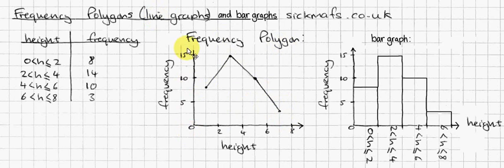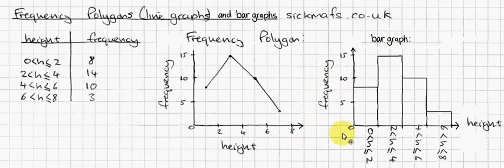Notice frequency should always be going up, and the other stuff — whatever it happens to be, like the height or the weight of the people — goes across. The same for bar graphs: frequency always goes up, and the category is across. Bar graphs are very similar to line graphs, but instead of doing a dot, you do a whole bar.